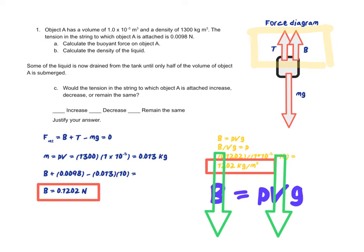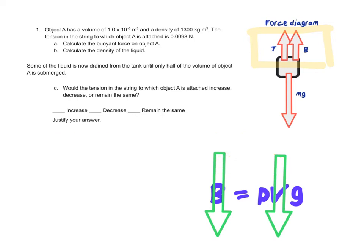So now if I go back to my net force statement, let me make some room here for everything. Going back to my net force statement, I see that if the buoyant force decreases, in order to stay equal to mg, the sum of B and T would have to stay the same. But if B decreased, T would have to increase. So the tension would actually increase. So I just showed that mathematically, but it also makes sense, right?